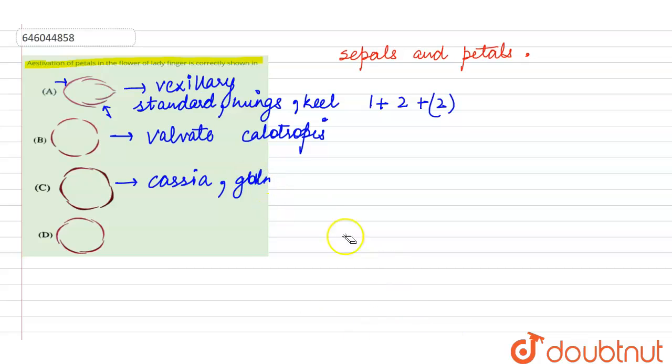Some petals are not overlapped on one side, while others are totally overlapped on both sides, whereas some are overlapped on one side. So here there is irregular overlapping, and such type will be called as the imbricate one.